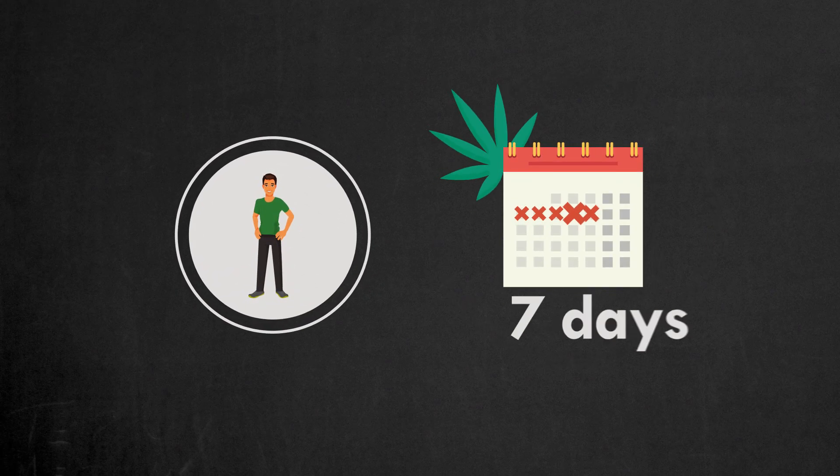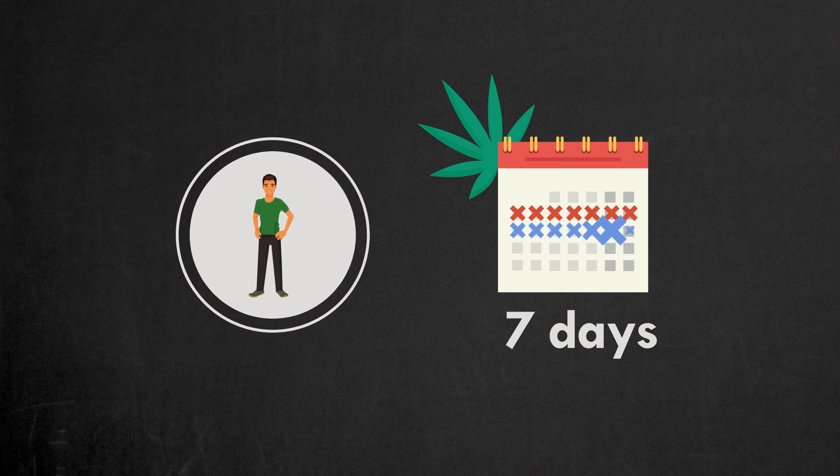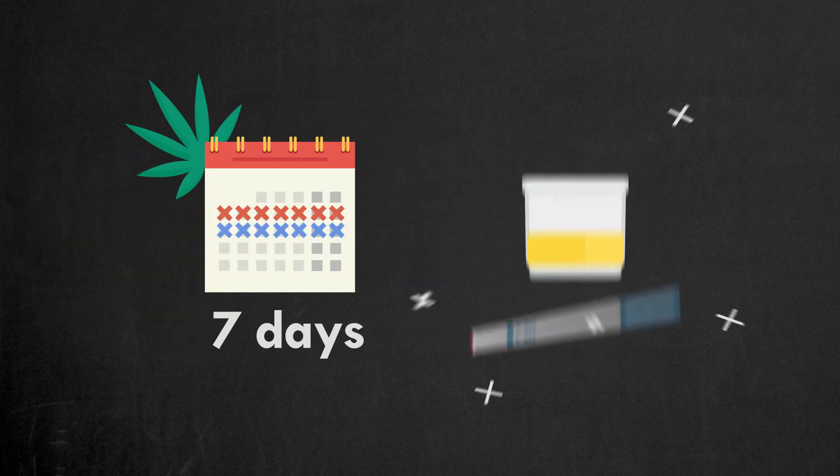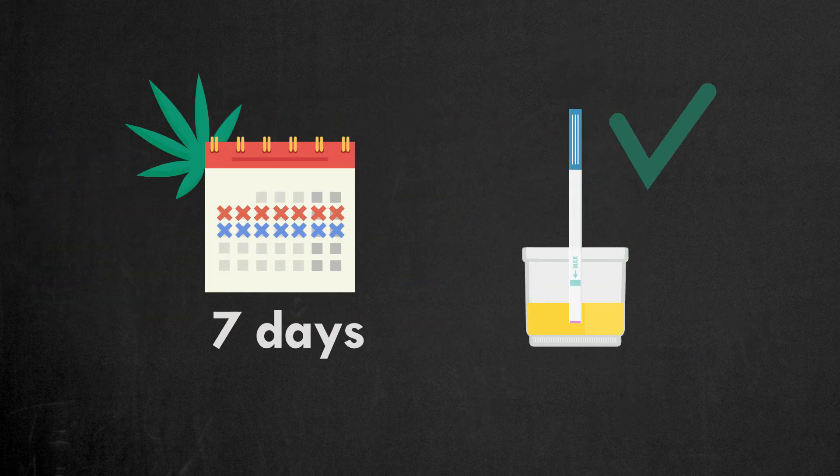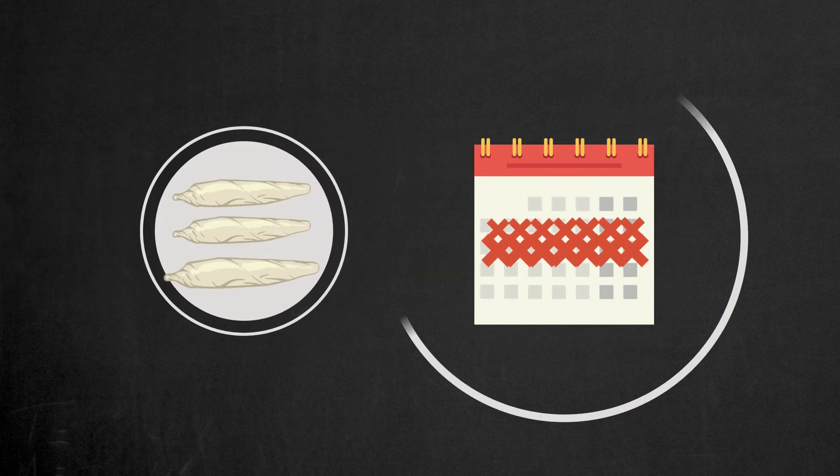Weed will stay in the system of a skinny person for up to 7 days. After that, small amounts of weed metabolites will remain in the system longer. But after 7 days, it will not be detectable in the urine. This is true for occasional smokers. Heavy smokers will require more time.